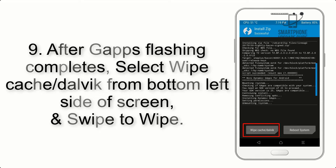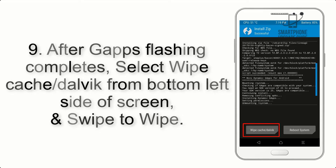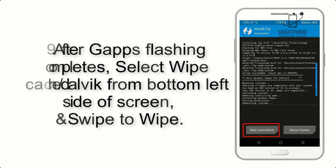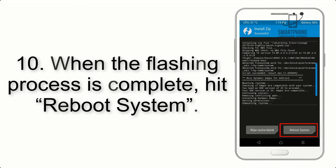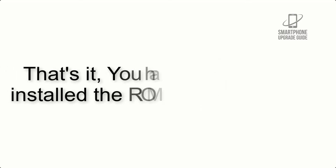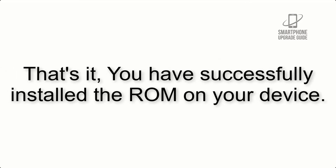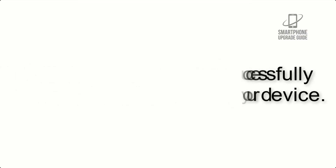Step 8: Flash the GApps zip package in the same manner. Step 9: After GApps flashing completes, select Wipe Cache and Dalvik from the bottom left side of the screen and swipe to wipe. Step 10: When the flashing process is complete, hit Reboot System. That's it — you have successfully installed the ROM on your device.